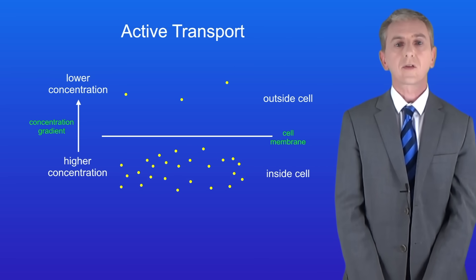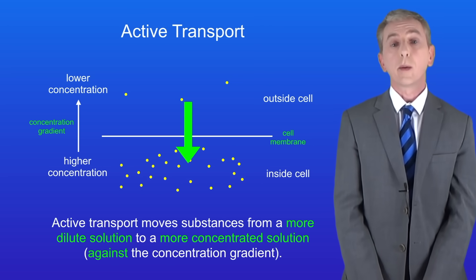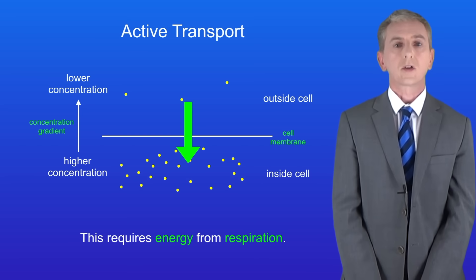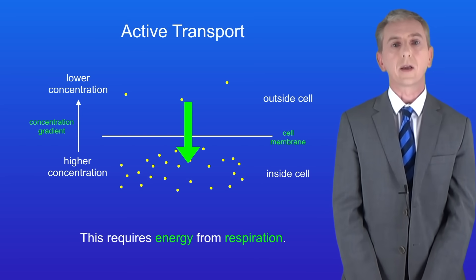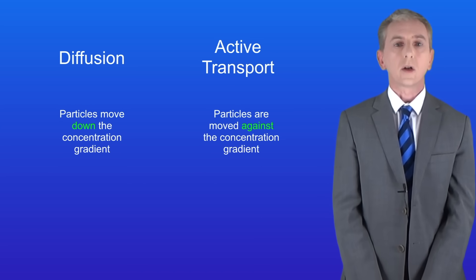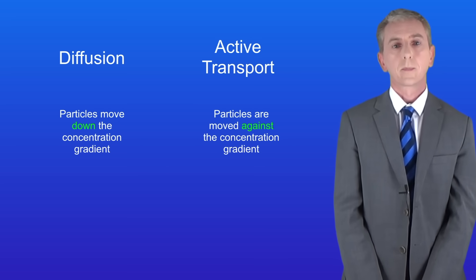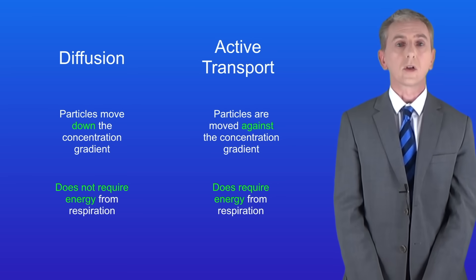To do this, the cell uses a process called active transport. Active transport moves substances from a more dilute solution to a more concentrated solution — in other words, against the concentration gradient. This requires energy from respiration. Active transport differs from diffusion in two key ways: in diffusion, particles move down the concentration gradient, whereas in active transport particles are moved against it. Also, diffusion does not require energy from respiration, whereas active transport does.